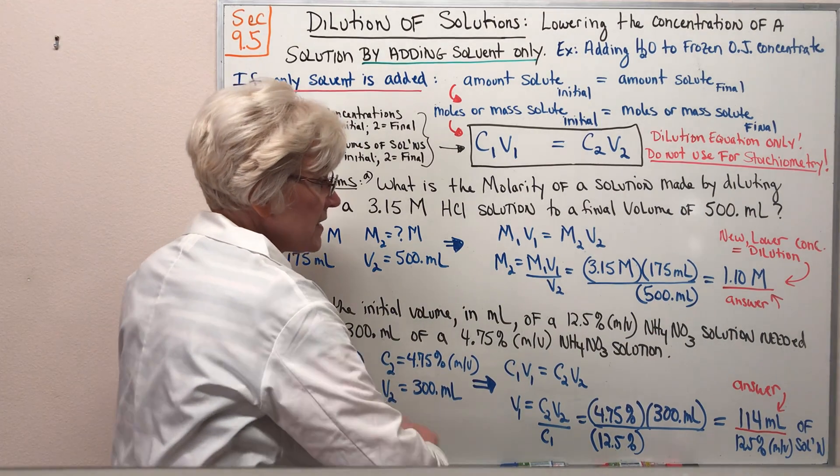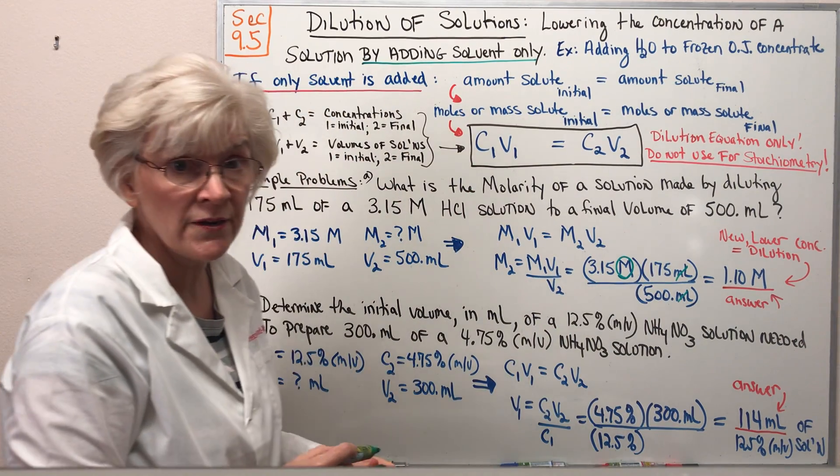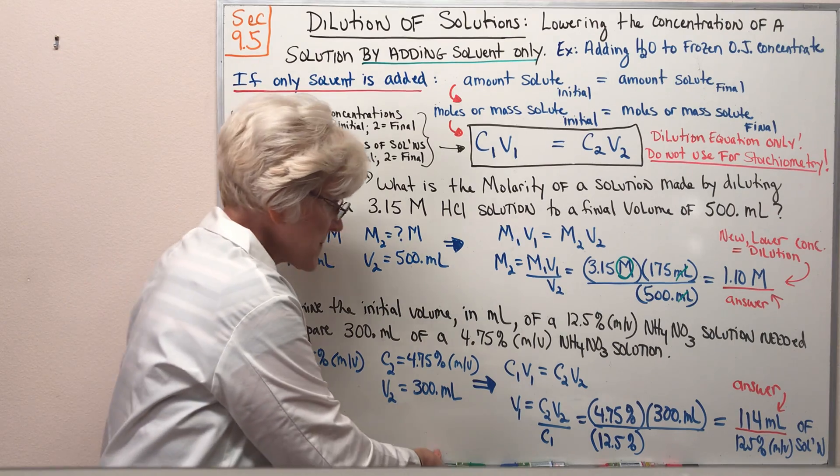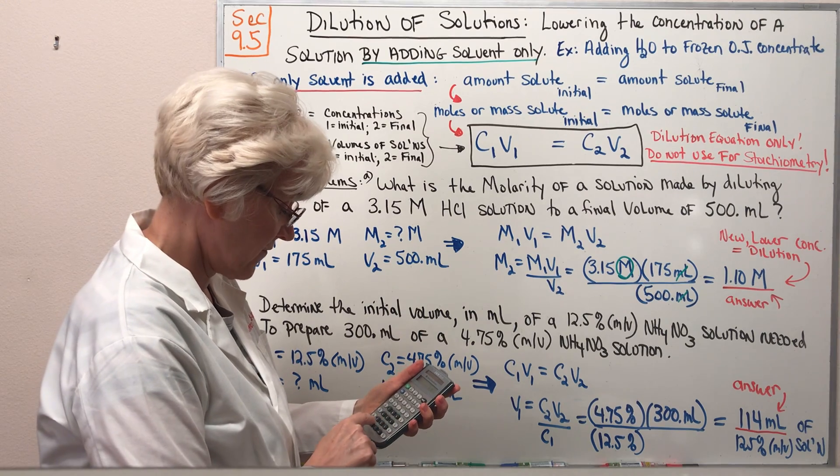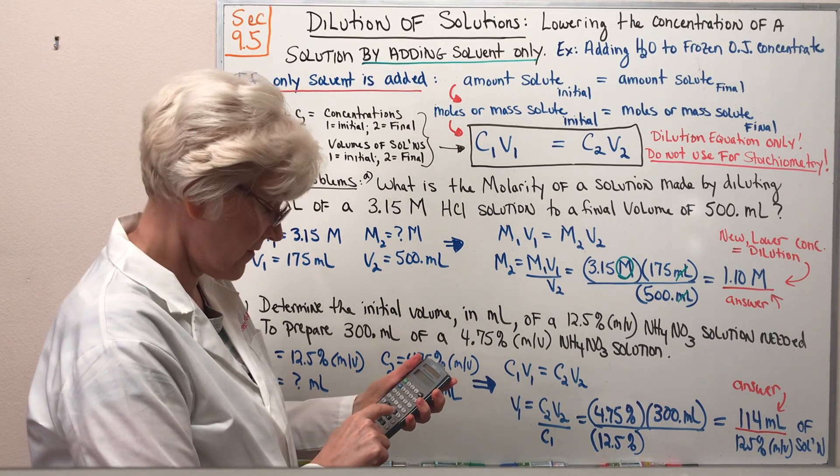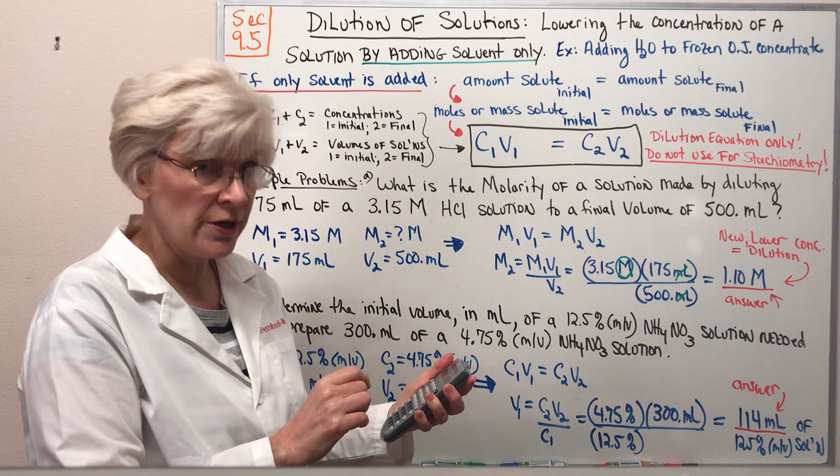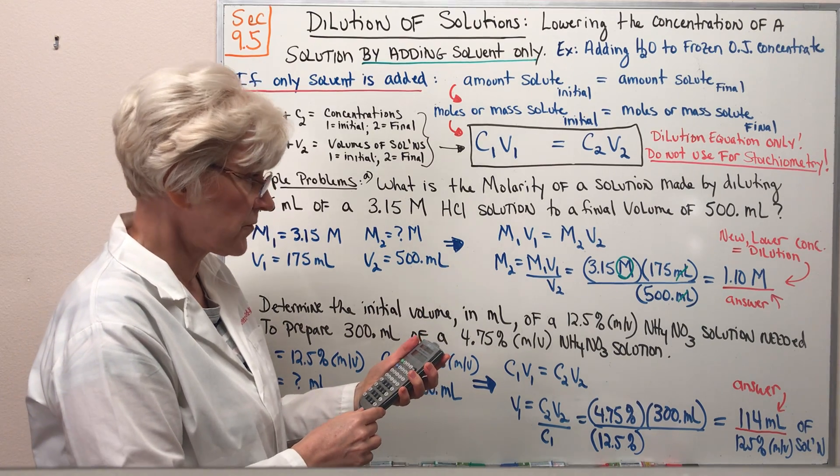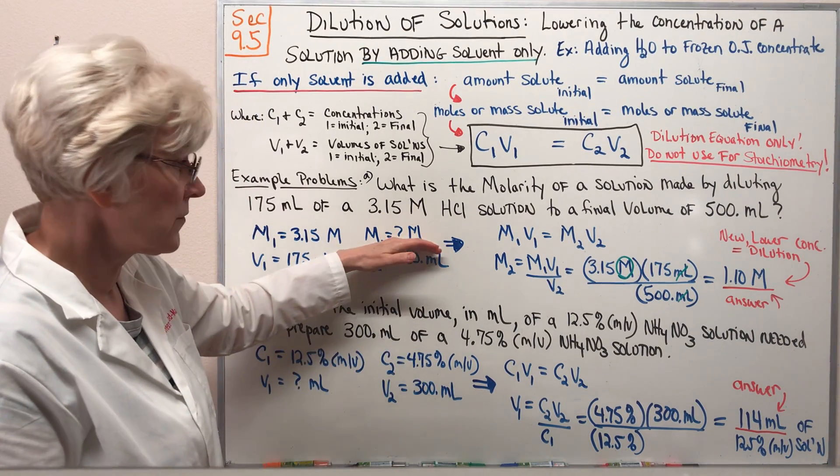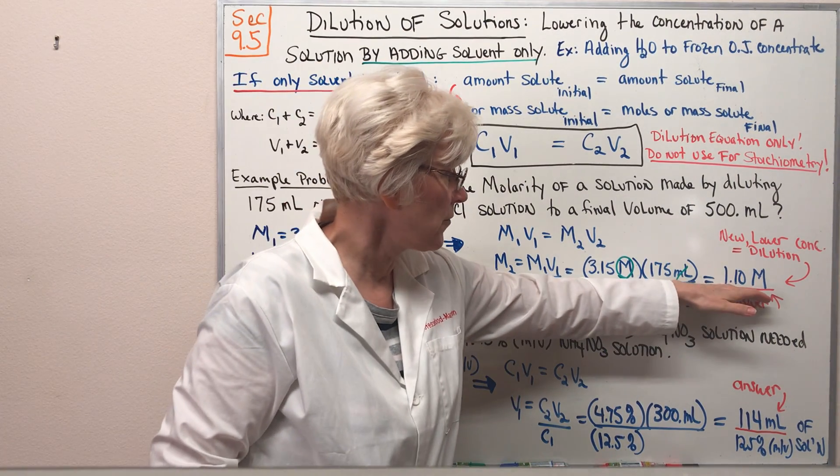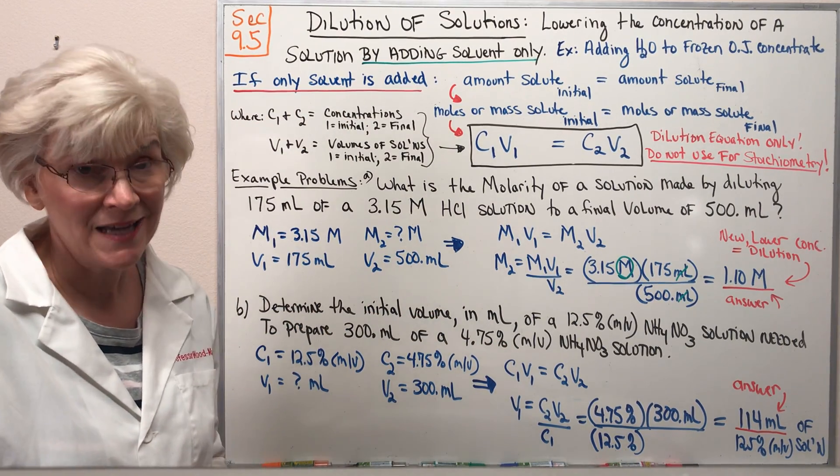Looking at the dimensional analysis, our milliliter units are canceling and we have a unit of molarity which is what we are solving for. Taking a calculator and going through the calculation, 3.15 times 175 divided by 500, I get a new lower concentration molarity with 3 sig figs of 1.10 M. So our final molarity is lower than our initial molarity, indicating that this solution has been diluted.